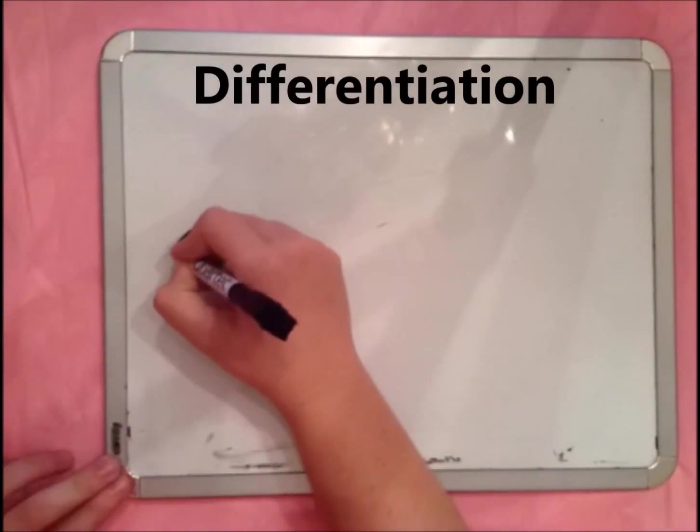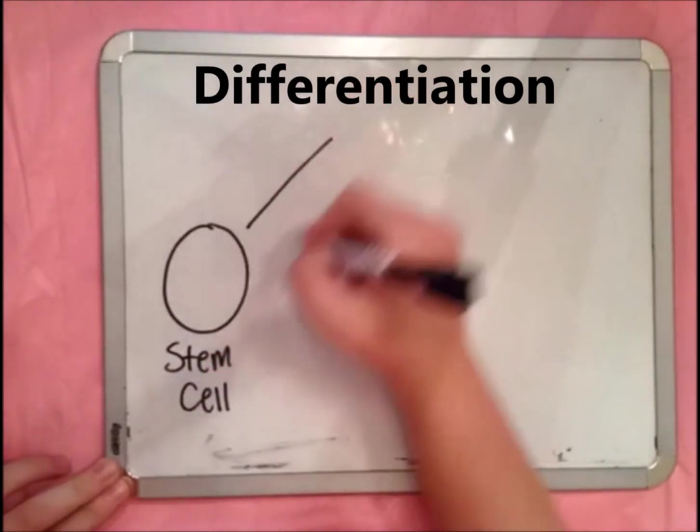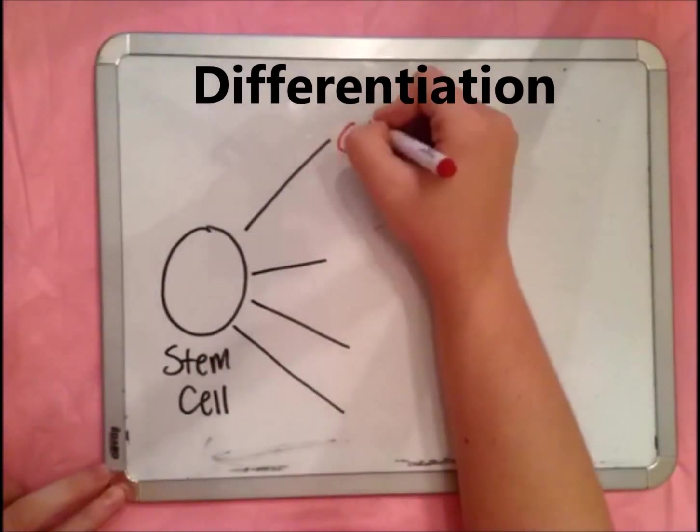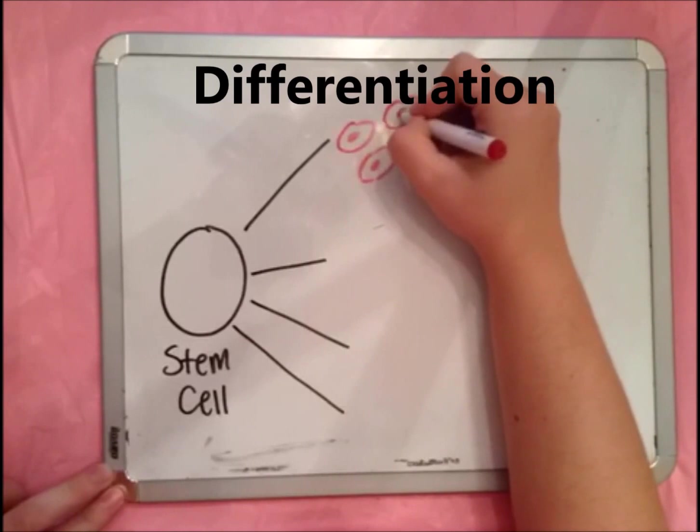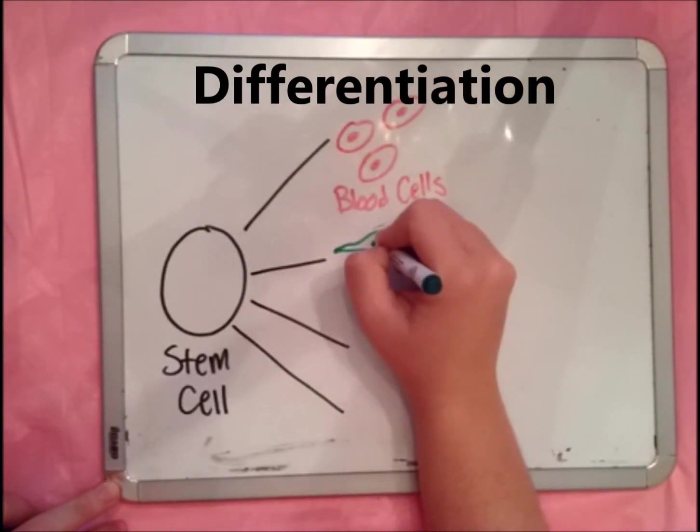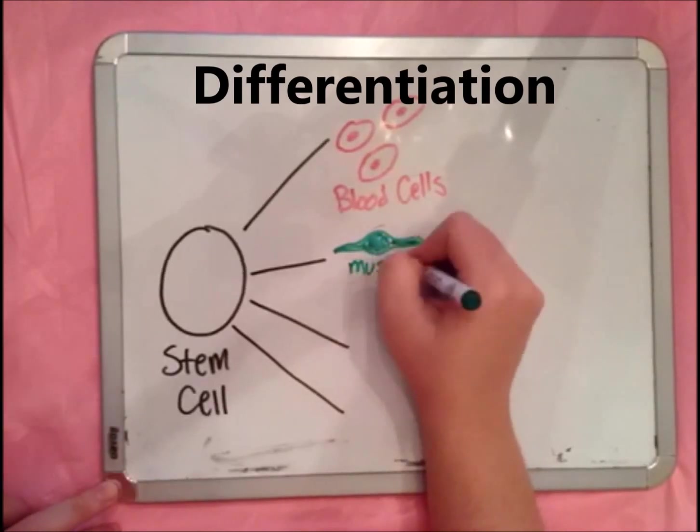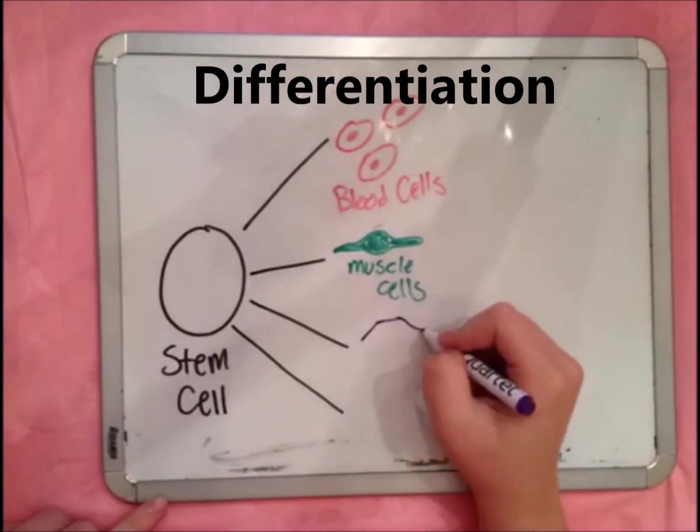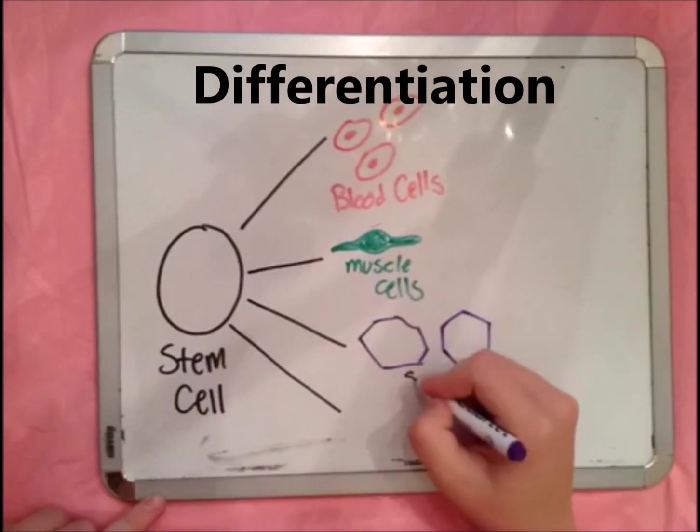To ensure that the correct axon follows the proper route, different axons will respond to the same protein differently. This is because of differentiation, a process undifferentiated cells, also known as stem cells, undergo, which determines what type of cell—blood, muscle, skin, brain, etc.—they will become.